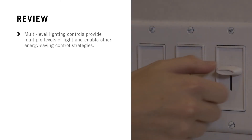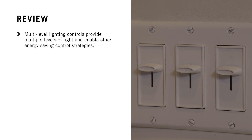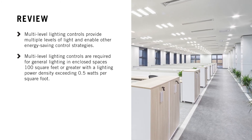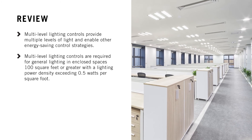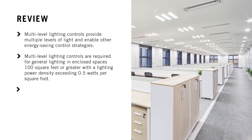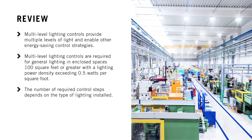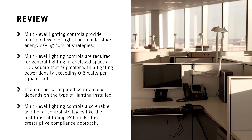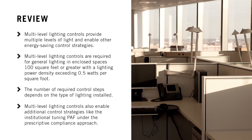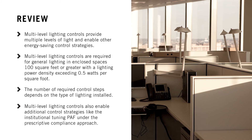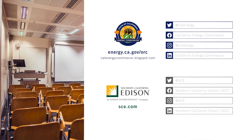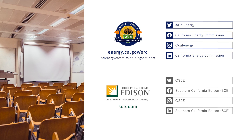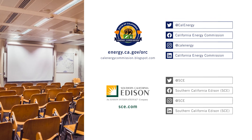Let's review what we've learned. Multi-level lighting controls provide multiple levels of light and enable other energy-saving control strategies. Multi-level lighting controls are required for general lighting in enclosed spaces 100 square feet or greater with a lighting power density exceeding 0.5 watts per square foot. The number of required control steps depends on the type of lighting installed, and multi-level lighting controls also enable additional control strategies like the Institutional Tuning PAF under the Prescriptive Compliance Approach. For more information, visit the Energy Commission website at energy.ca.gov/ORC.